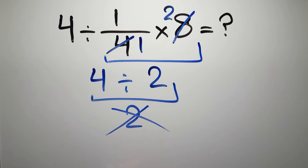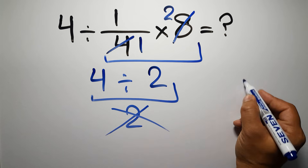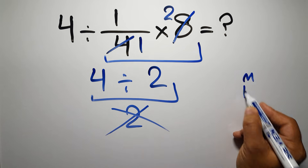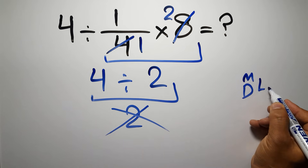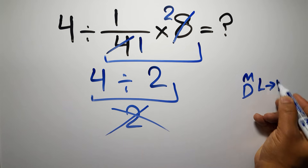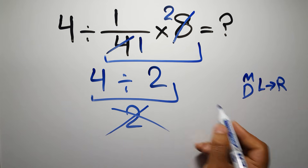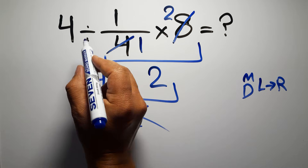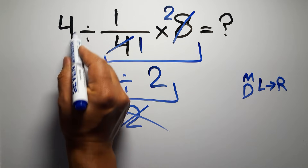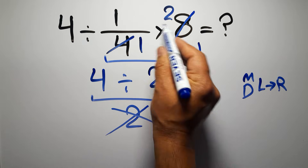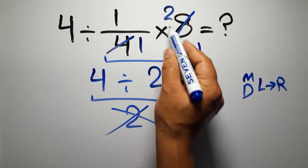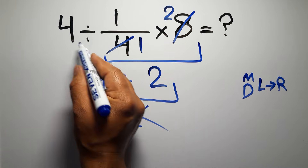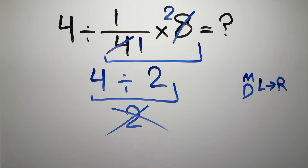Because according to the order of operations, multiplication and division have equal priority and we have to work from left to right. So here first we have to do this division, then this multiplication. If we do this multiplication before this division, it is wrong.